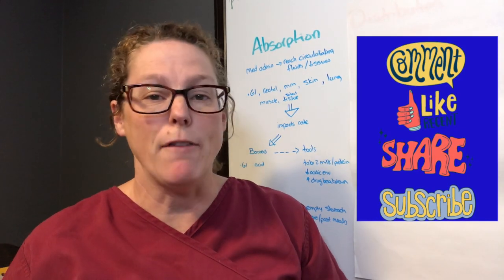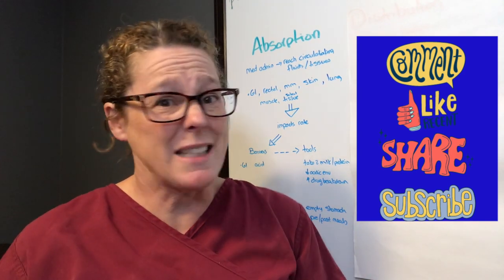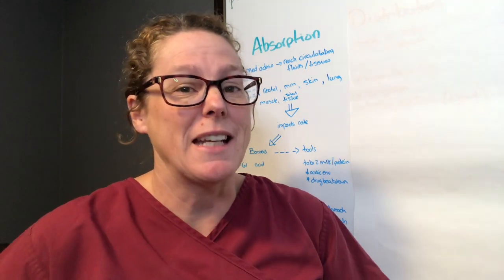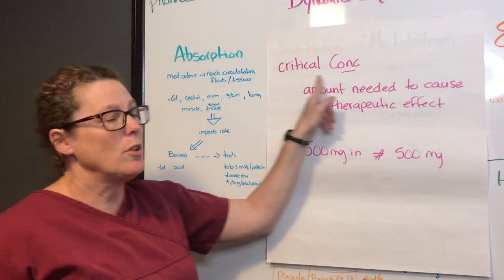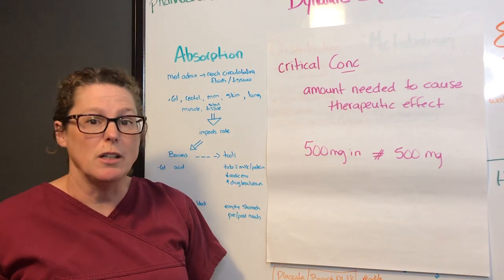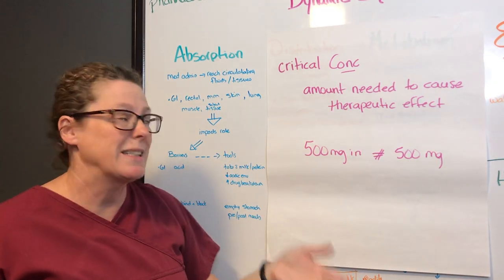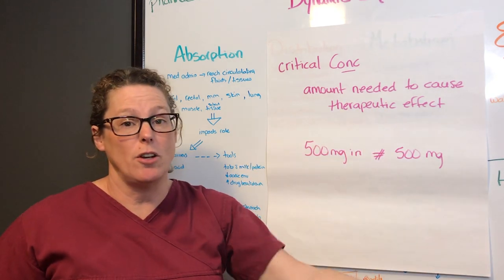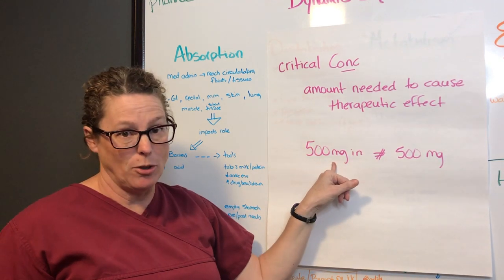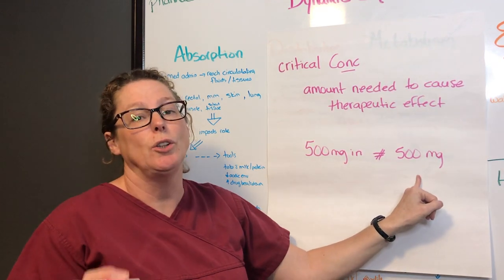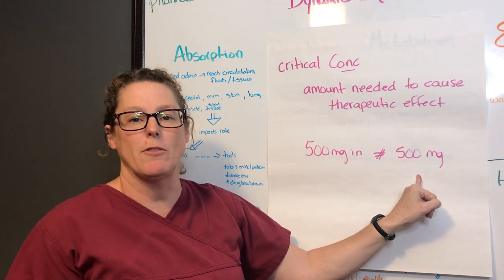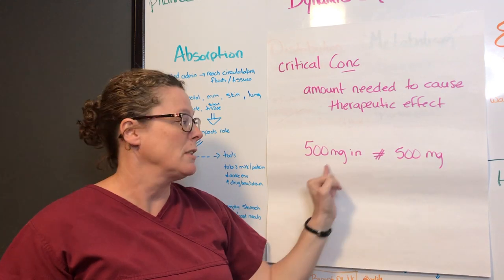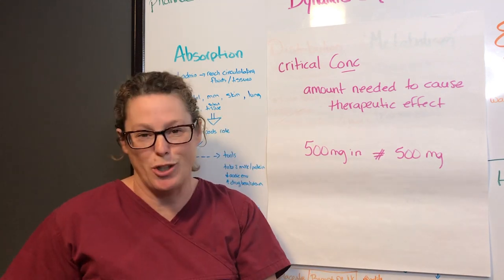Did you know that when you take 500 milligrams of acetaminophen, your body doesn't actually receive and use 500 milligrams? That's something that we call dynamic equilibrium. The critical concentration of a drug is determined by all the factors we're going to talk about today — essentially, how much drug do I need to cause a therapeutic effect? The actual amount a person can use from that dose will depend upon four factors.